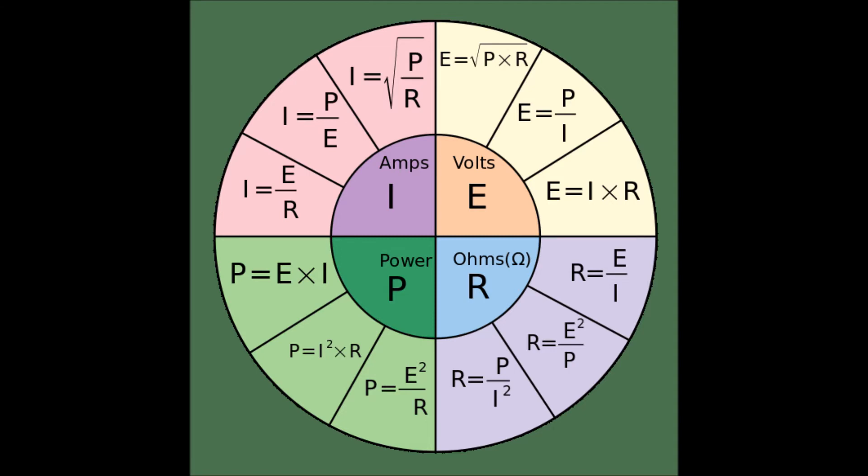You can see that each one of these, for instance, the upper left corner quadrant of the wheel is amperage. And there's your I. To find I, you can use the three formulas that are in the wheel. The same thing, the top right is voltage, designated by the E. To solve for that, you could use the three formulas in the outer ring of the upper right part of the wheel.